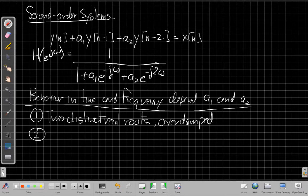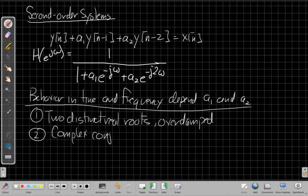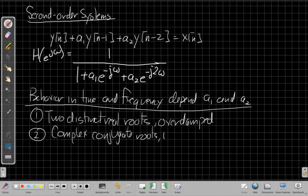The second one is if I get complex conjugate roots. With real coefficients, I can still get two roots that are complex conjugates of each other. And this is often called underdamped.